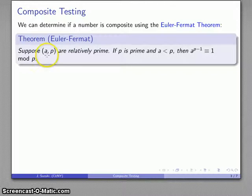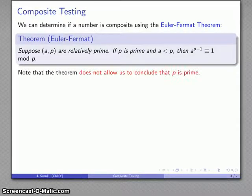To restate that, if I have two numbers a and p that are relatively prime, if p is a prime number and a is some value smaller than p, then a to the power p minus 1 is going to be congruent to 1 mod p. This sounds great because it seems to be a good way of distinguishing primes from non-primes.